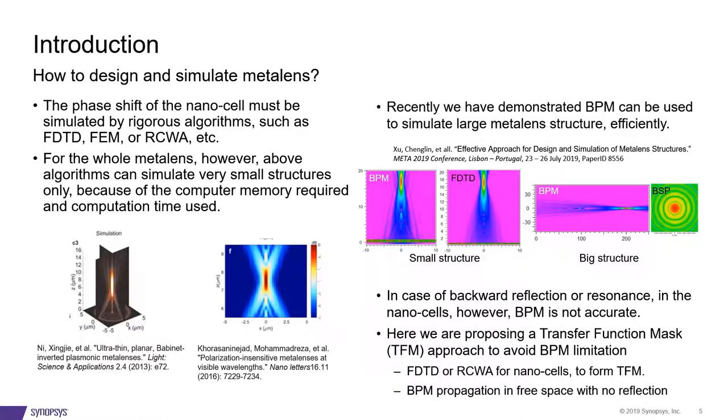We have validated the BPM results against FDTD for a small structure and later we did that for BSP for a large structure. But being fast comes with a price. BPM is one way propagation and it cannot account for backward reflections. In case the reflection or resonance in the nano cells is important for you, then BPM will not be accurate anymore. So for that, we are proposing another approach we call it the transfer function mask or TFM. We can use FDTD or RCWA for nano cells to form a TFM of the whole metal lens. Then we use BPM to propagate the transmitted field in free space where there is no reflection at all.